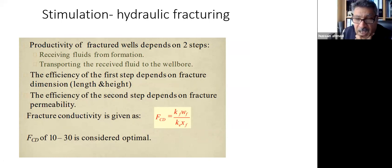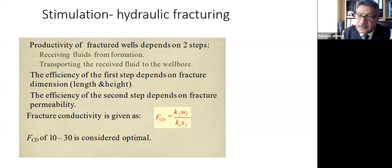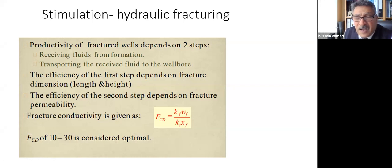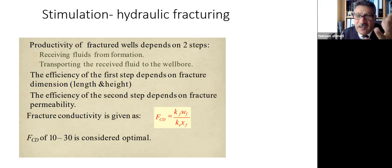FCD is dimensionless. An FCD of 10 to 30 means production increased by 10 times — before fracturing you produce 100 barrels per day, after fracturing you could jump to 1000 barrels per day. A factor of 10 to 30 means you are doing very well and can get your money back soon. A tight reservoir has permeability less than one millidarcy and needs fracturing.